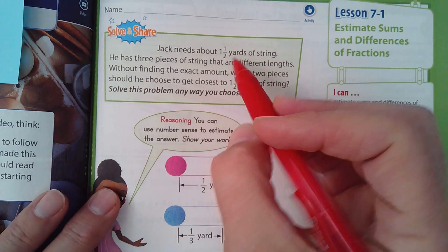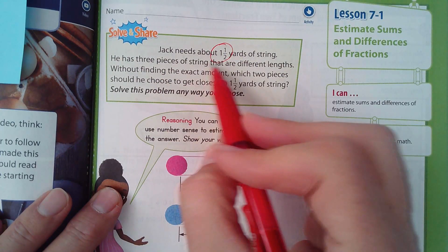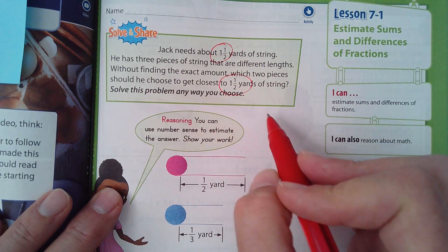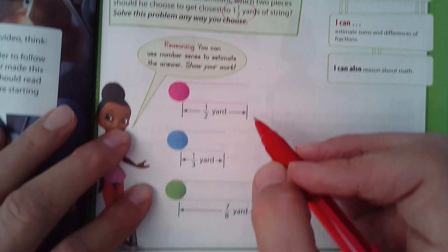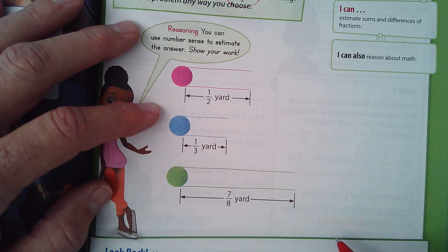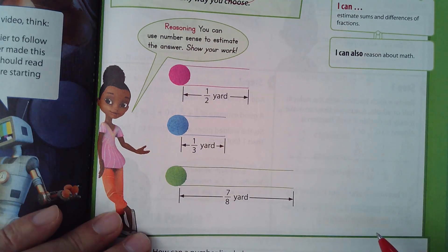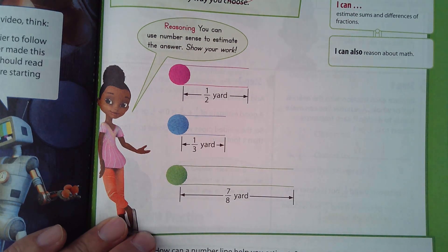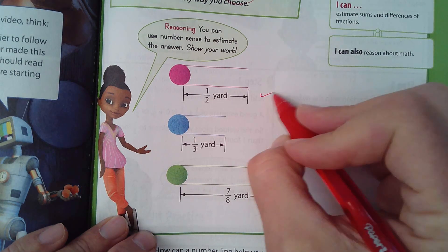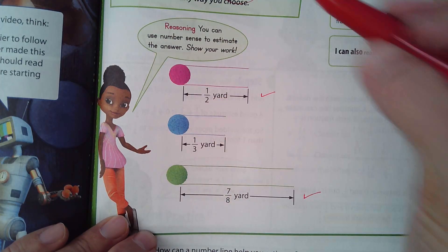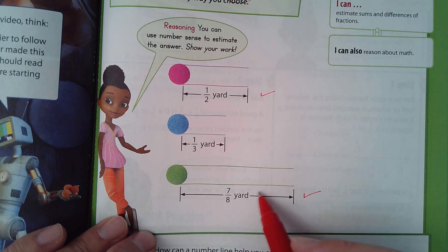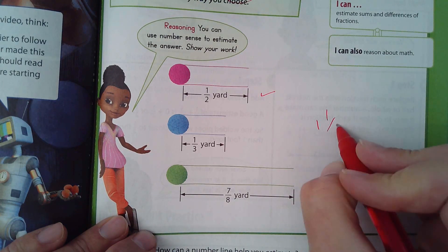It says that Jack needs about one and one-half yards of string. He has three pieces of string that are different lengths. Without finding the exact amount, which two pieces should he choose to get closest to one and one-half yards? So these are the three lengths that they give us to choose from: half a yard, a third of a yard, and seven-eighths of a yard. Most of you probably recognize that we would use these two pieces. One-half is exactly the half that we're looking for, and seven-eighths is pretty close to one.